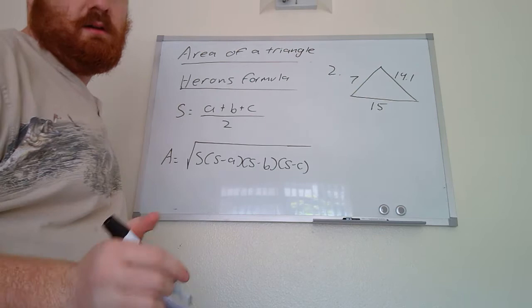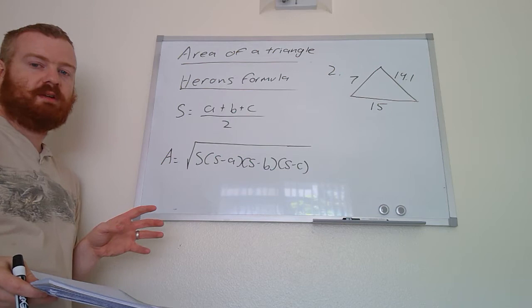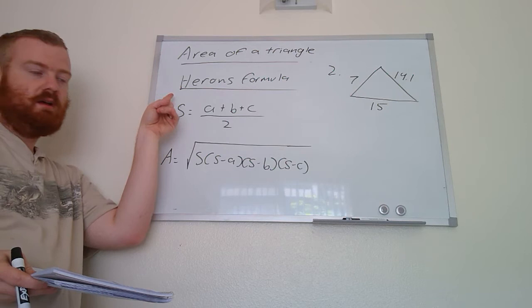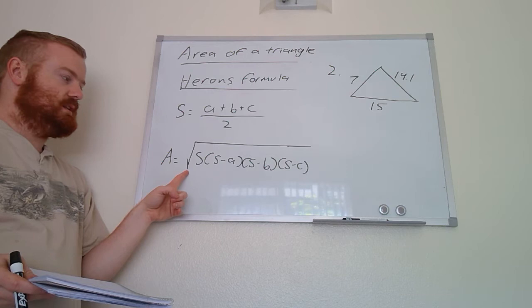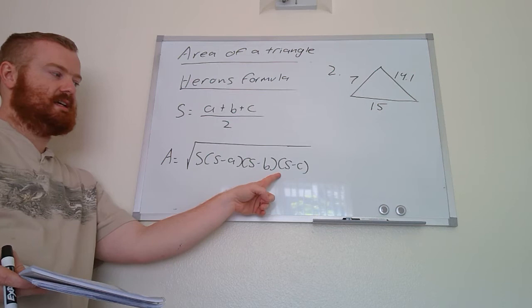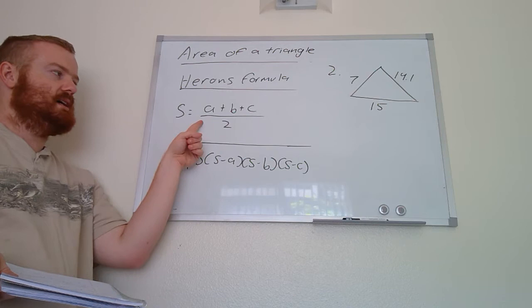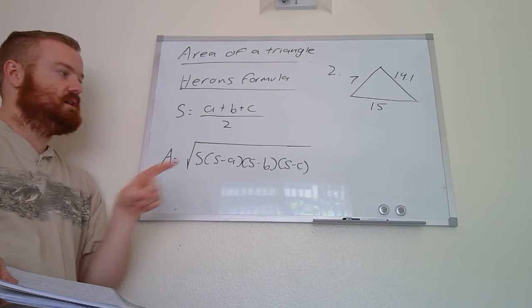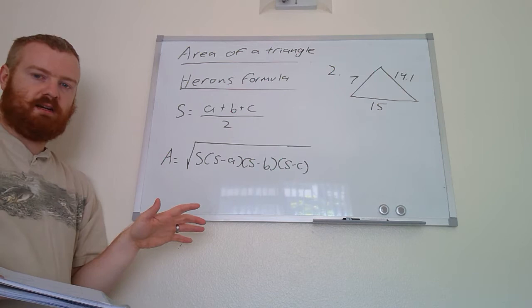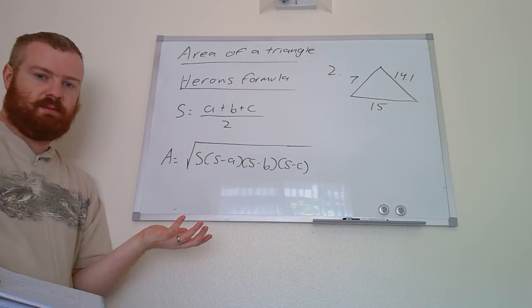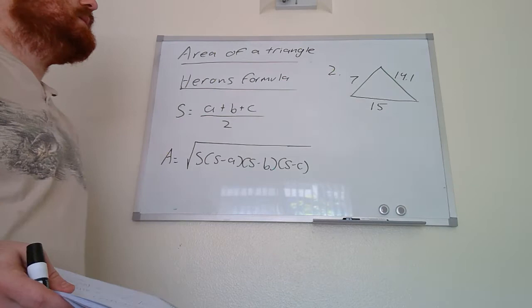The second formula we're going to use is for when we have no angle measurements — just three side lengths. This is called Heron's formula. The area equals the square root of s times (s minus a) times (s minus b) times (s minus c), where a, b, and c are the three side lengths. The value s is calculated by adding the three side lengths together and dividing by two. You get s first, then plug everything into the formula and let the calculator do the work.